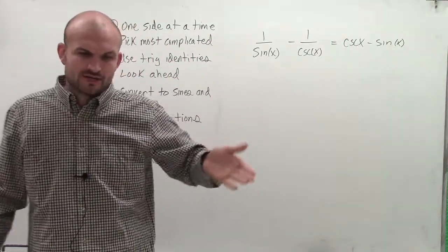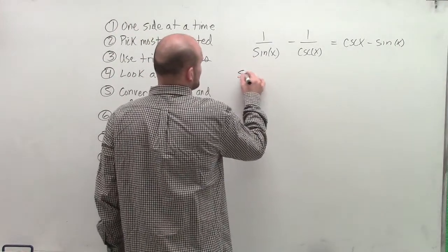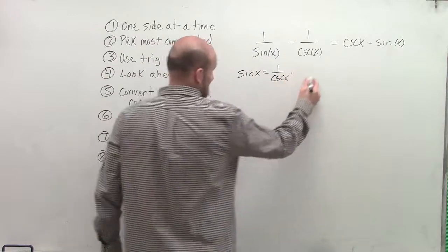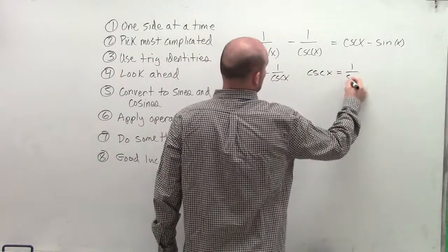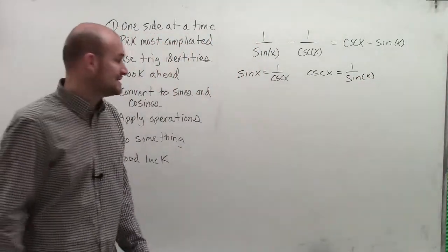let's think of our trigonometric identities. And the main important thing to understand is sine of x is equal to 1 over cosecant of x. And cosecant of x is equal to 1 over sine of x. These are what we call our reciprocal identities.